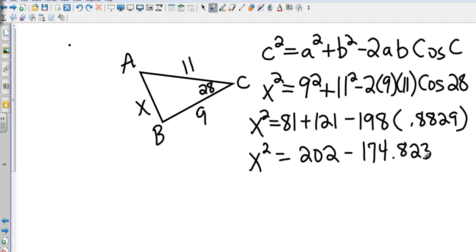So I'll take 202 minus 174.823. That gives me about 27.177.